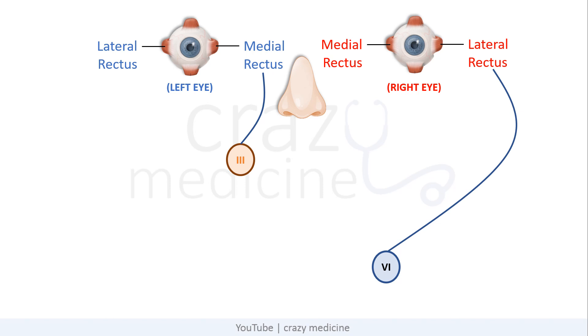The nucleus of the 3rd nerve is situated in the midbrain and the nucleus of the 6th nerve is in the pons. This is the basic anatomy. Now let us take our discussion forward.